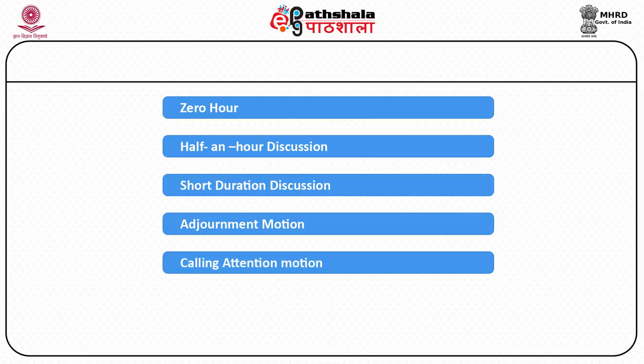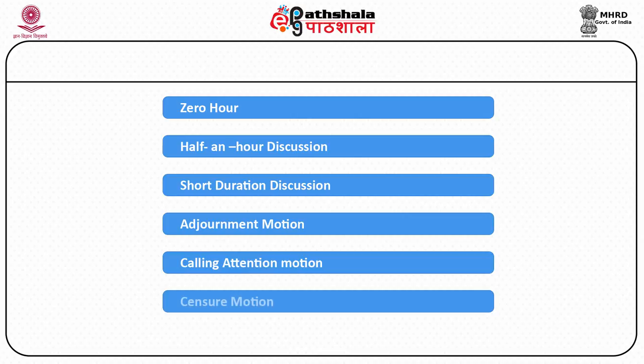The call attention motion is a notice introduced in parliament by a member to call the attention of a minister to a matter of urgent public importance and seek a statement from him on that matter. This motion needs the support of at least 50 members to be admitted. As it interrupts normal business of the house, it is regarded as an extraordinary practice, and the Rajya Sabha is not permitted to use this device.